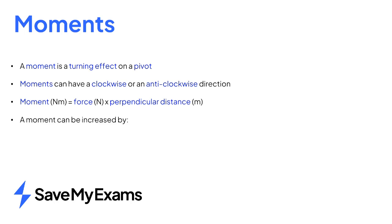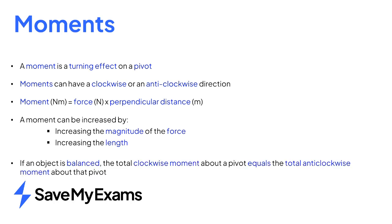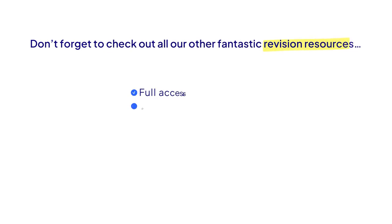A moment can be increased by increasing the magnitude of the force and increasing the length. The principle of moments states that if an object is balanced, the total clockwise moment about a pivot equals the total anticlockwise moment about that pivot.